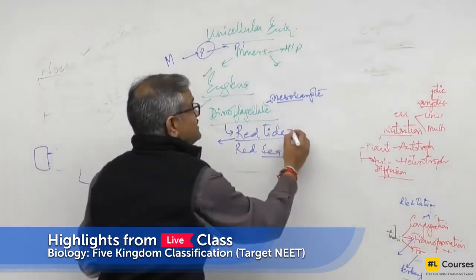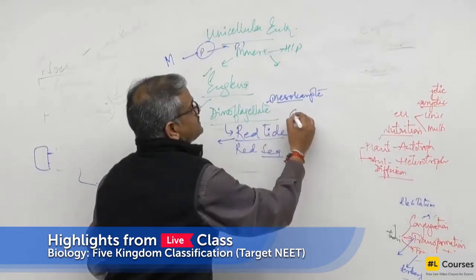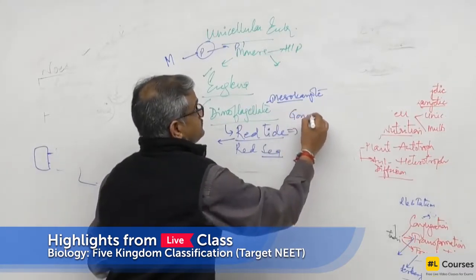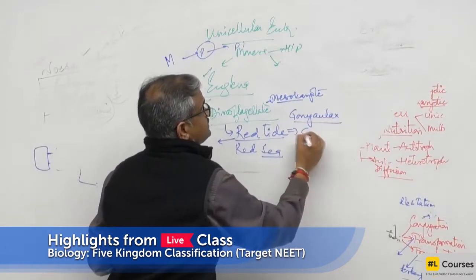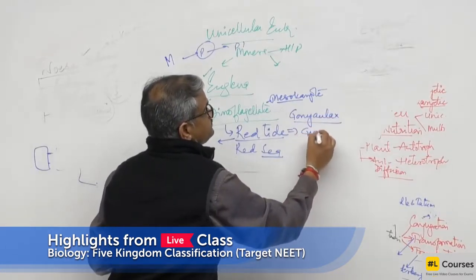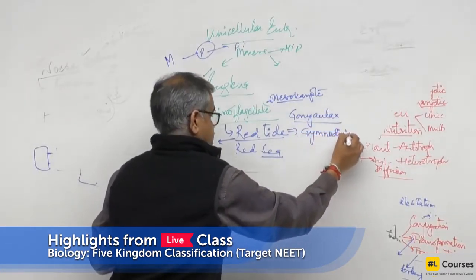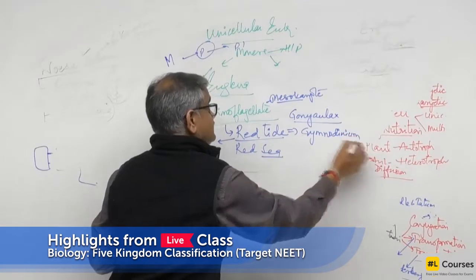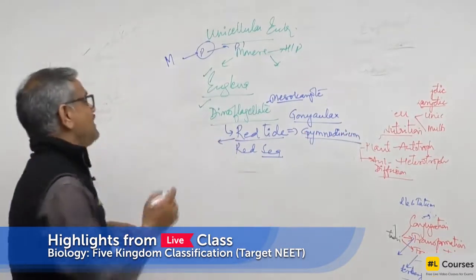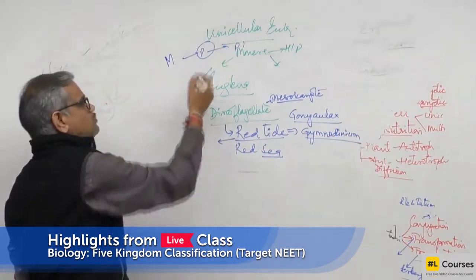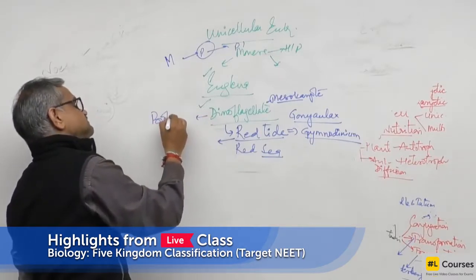Red Tide is caused by Dinoflagellates — Gonyaulax and Gymnodinium. They usually glow. That is why Dinoflagellates, or most of the Protista members, have bioluminescence.